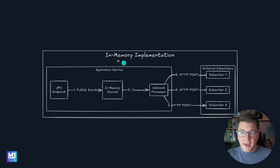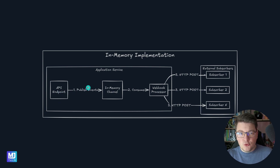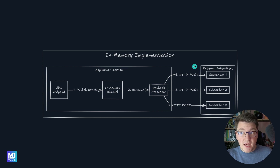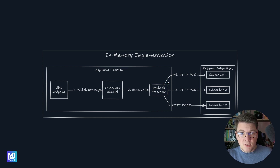Let's explore this from a different angle. We have our application service as one component and then we have many external subscribers for a given webhook event. When a request reaches our API endpoint we're going to trigger some business logic and a side effect could be publishing an event. This event would be published to an in-memory channel and our consumer would handle it — the webhook processor component — and it would immediately send multiple HTTP requests to any subscribers. The problem here is that the number of subscribers is theoretically infinite, so our webhook processor would need to send an infinite number of HTTP requests. The more subscribers we have, the slower this operation becomes.